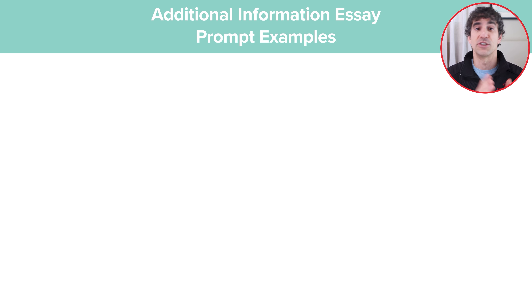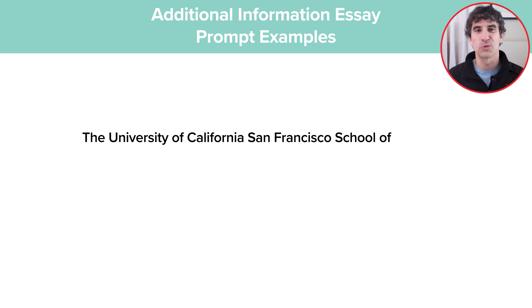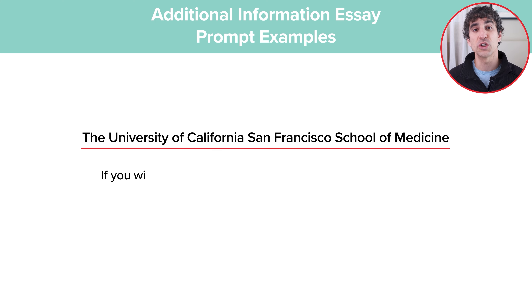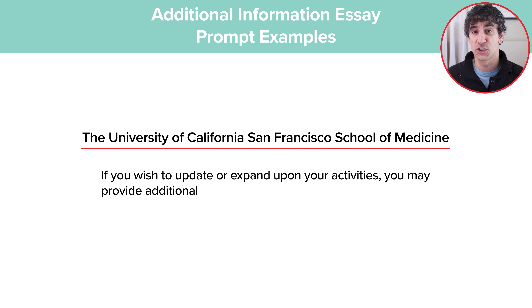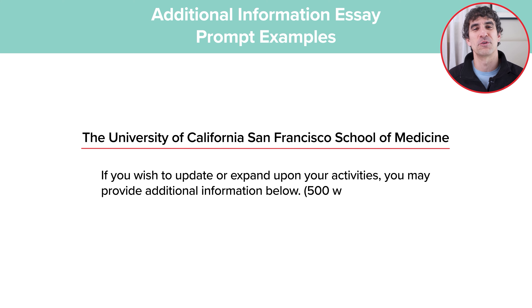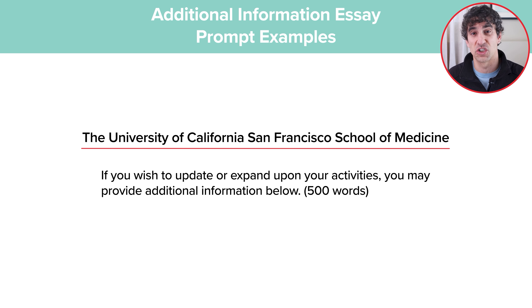To illustrate this, let's take a look at a few examples of Additional Information Prompts that cover each of these areas and discuss how to approach each of them. The University of California–San Francisco School of Medicine's prompt reads: 'If you wish to update or expand upon your activities, you may provide additional information below. You have 500 words to respond.' Even though this prompt is technically optional, we strongly recommend responding to it. But resist the temptation to simply rehash your work and activities section here.